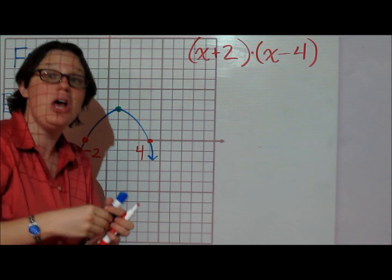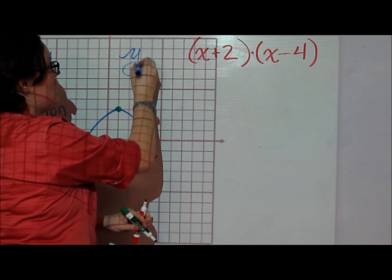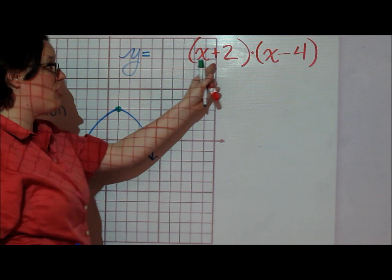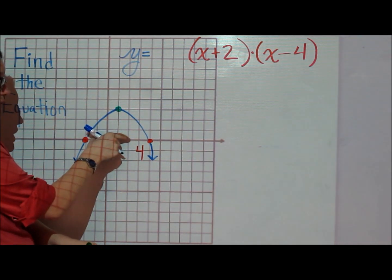A parabola of the form y equals x plus 2 times x minus 4 has these x-intercepts.